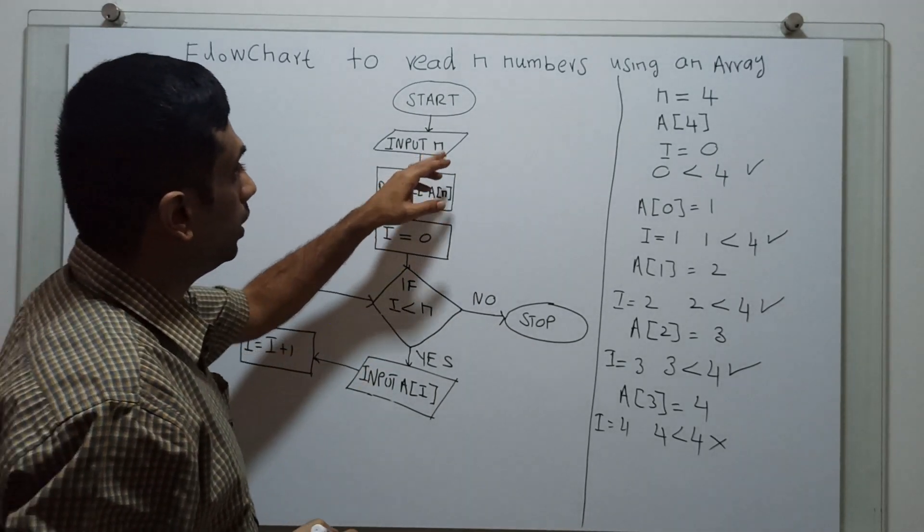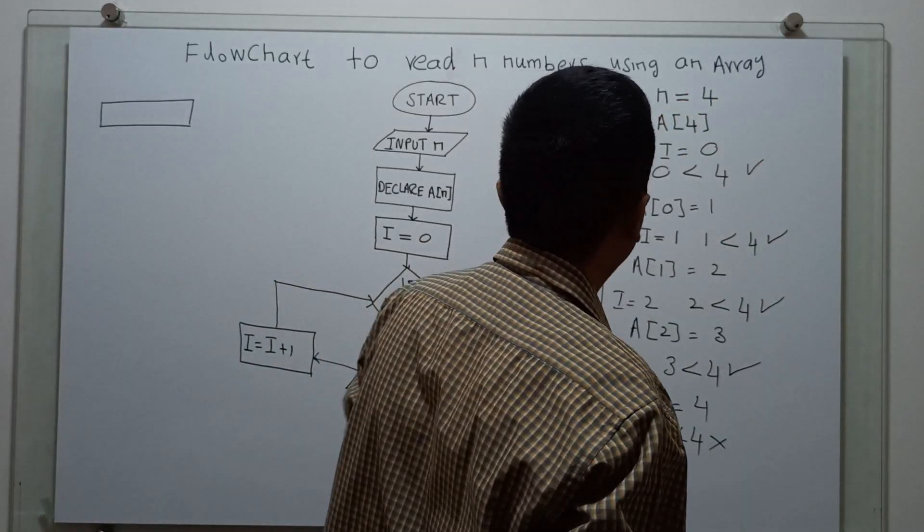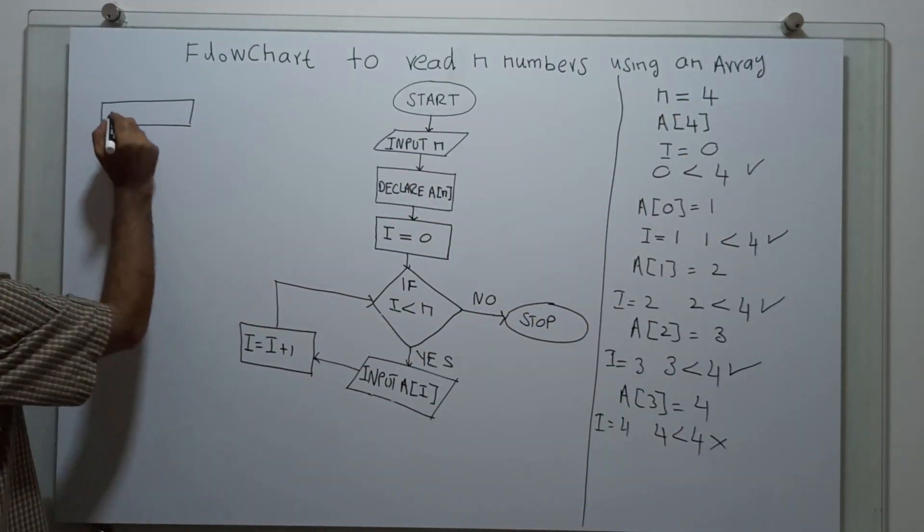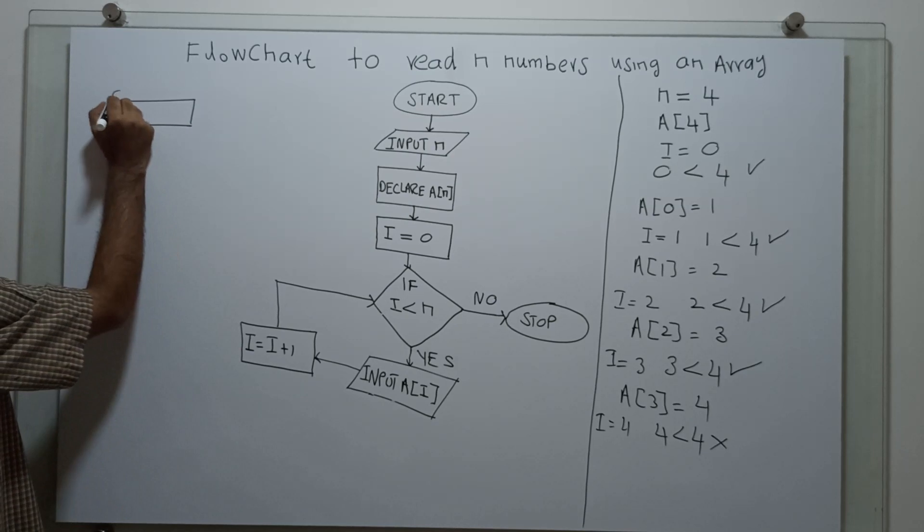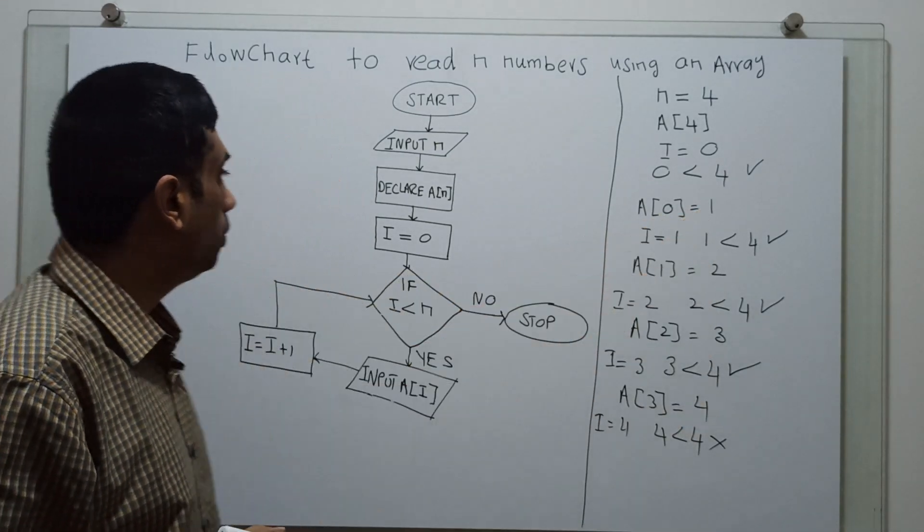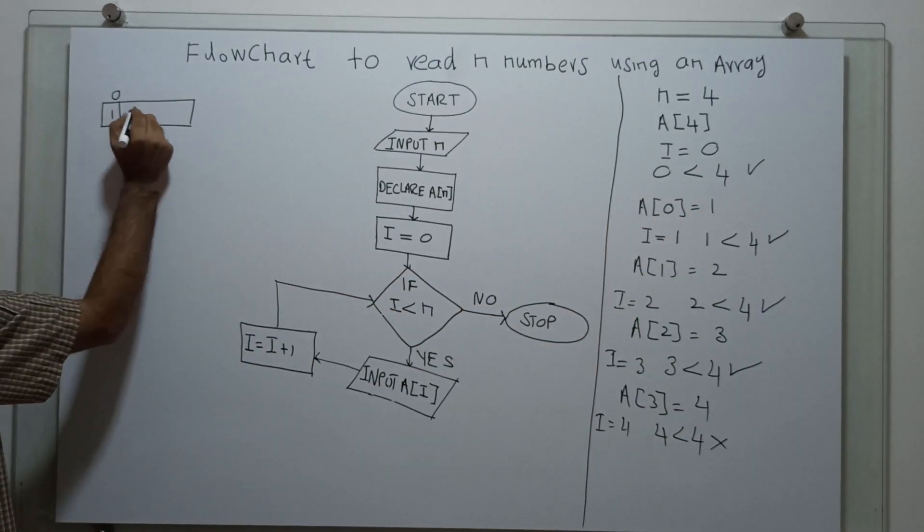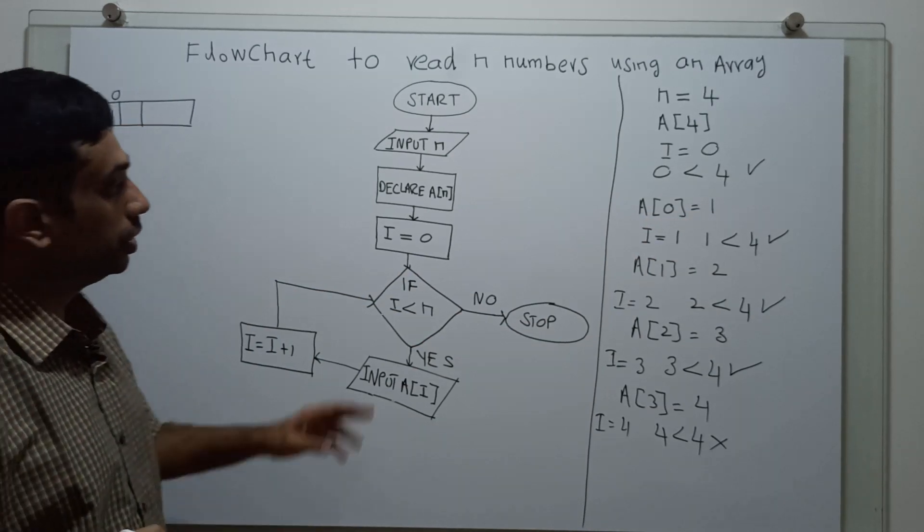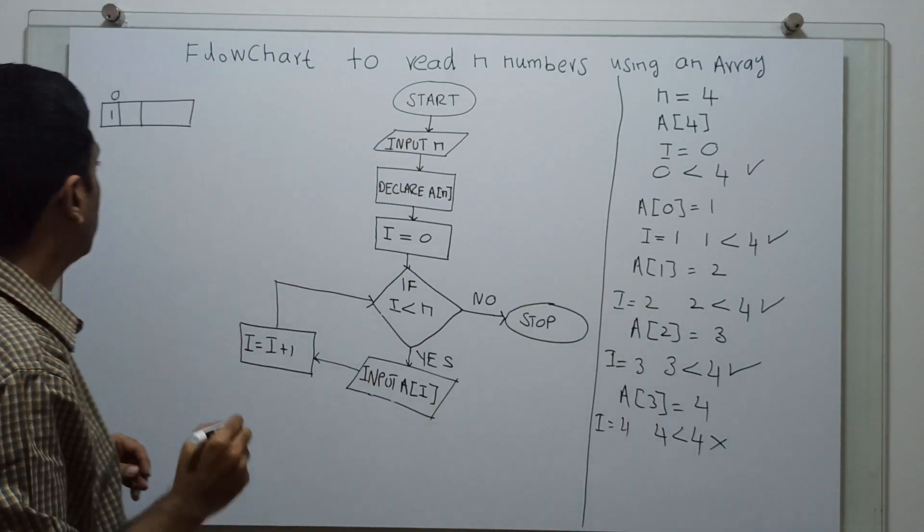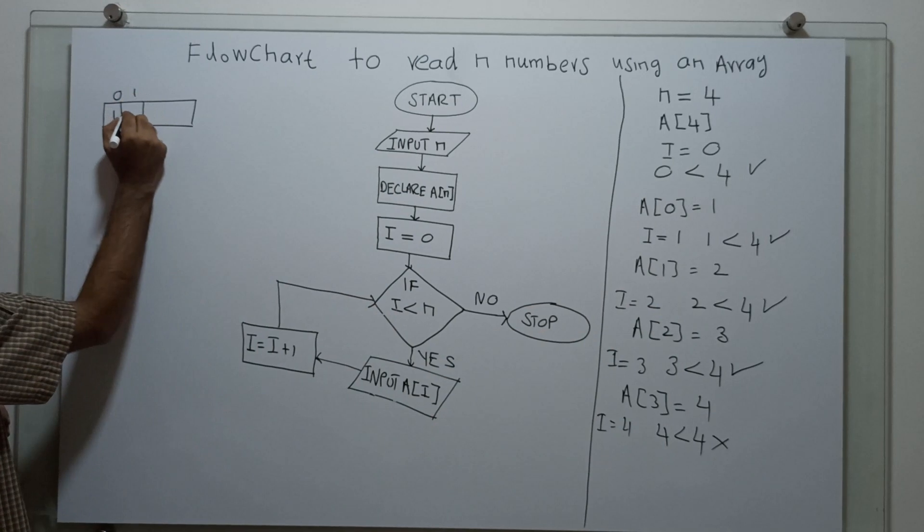My intention is to store n numbers. How many numbers? To store 4 numbers. Array index starts from 0. So, 0 to the next. What I store? I store the value 1. Then, index 1. Next loop. Index 1. I store the value 2.